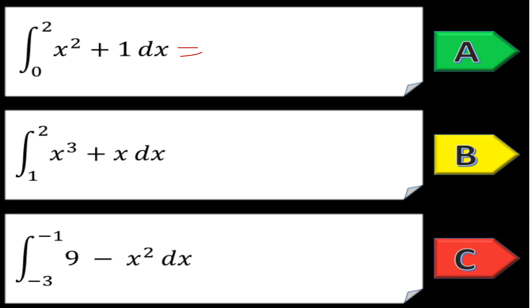Question one: evaluate the integral from limits of zero to two of x squared plus one dx. For integrations, we add one to the power and divide by the new power. So x squared becomes x cubed over three, and one integrates to plus one x over one.